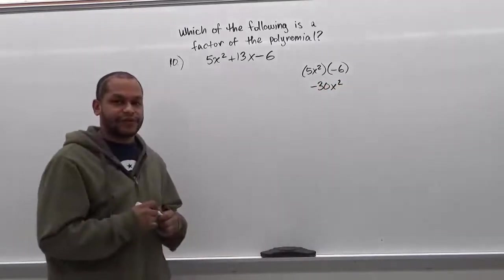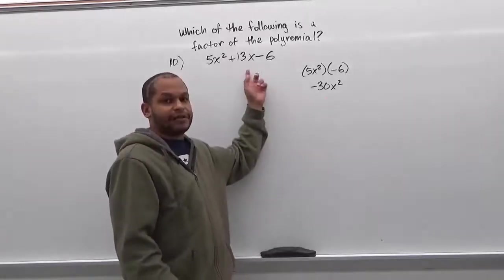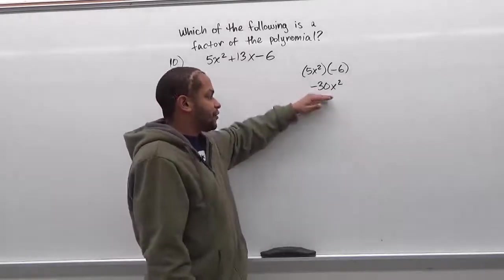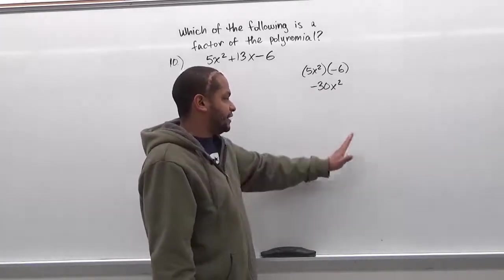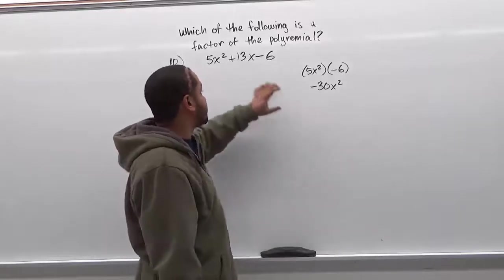And our goal here is to find the two factors that multiply to make negative 30x squared but add up to positive 13x. So we're going to create a full list of factors and sum them each up to see what the possible sums are and then find the correct sum and substitute it out.